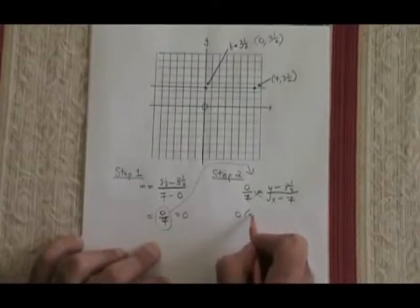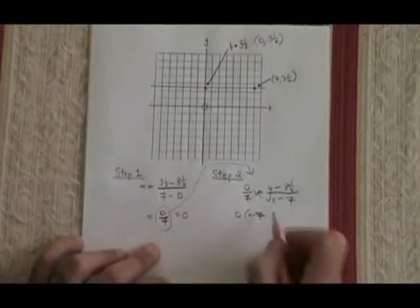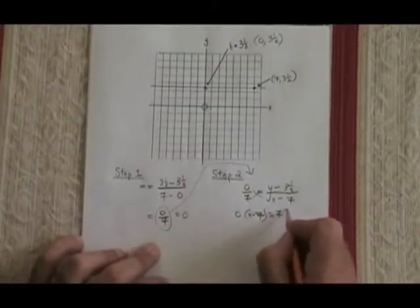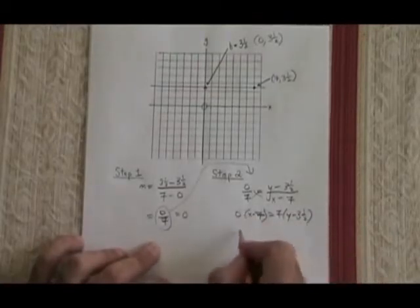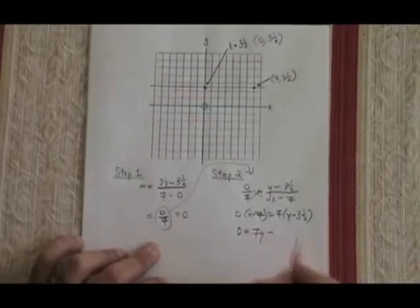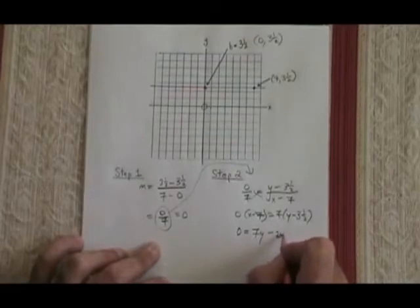Cross-multiplying, I get 0 times x minus 7 equals 7 times y minus 3.5. 0 times x minus 7 is equal to 0. 7 times y is 7y. 7 times negative 3.5 is negative 24.5.